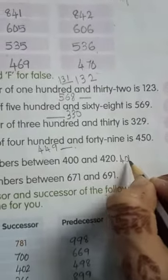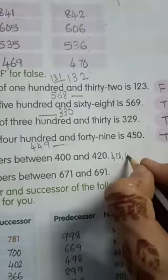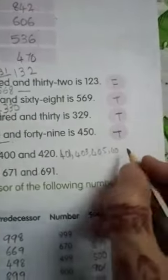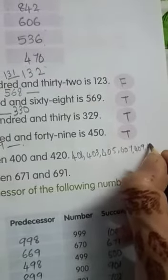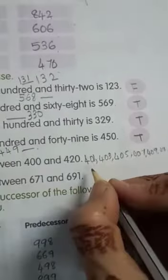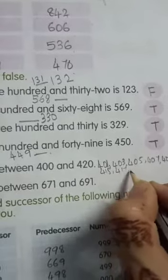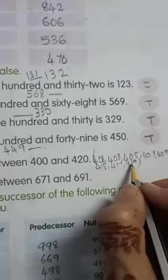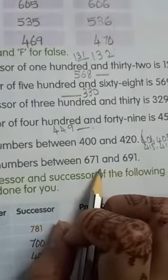So the odd numbers between 400 and 420 are: 401, 403, 405, 407, 409, 411, 413, 415, 417, 419. These are the odd numbers between 400 and 420. Next, write the even numbers between 671 and 691.